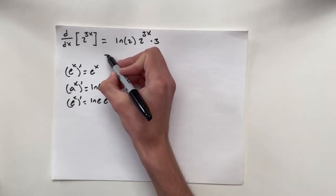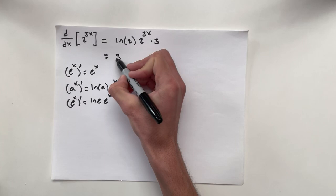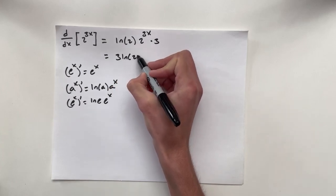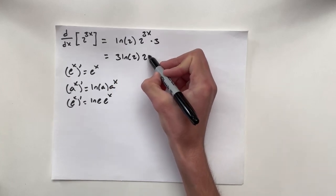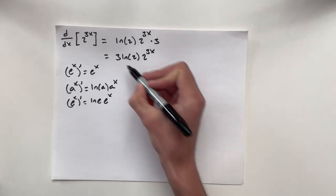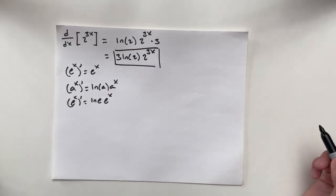So then just simplifying that out, we have 3 ln 2, get our constants up there, 2 to the 3x. And that is the solution.